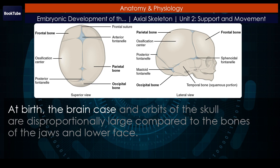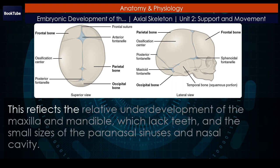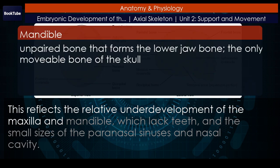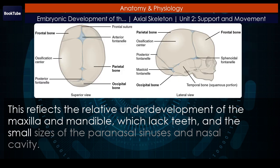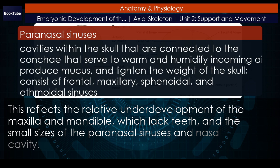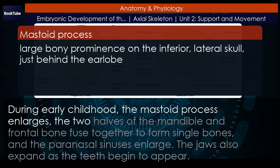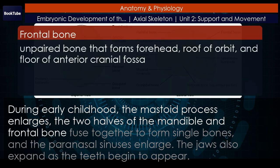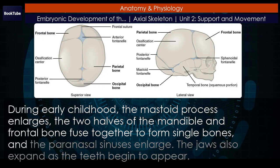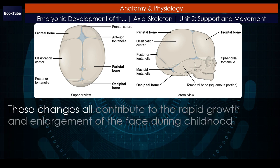At birth, the brain case and orbits of the skull are disproportionately large compared to the bones of the jaws and lower face. This reflects the relative underdevelopment of the maxilla and mandible, which lack teeth, and the small sizes of the paranasal sinuses and nasal cavity. During early childhood, the mastoid process enlarges. The two halves of the mandible and frontal bone fuse together to form single bones, and the paranasal sinuses enlarge. The jaws also expand as the teeth begin to appear. These changes all contribute to the rapid growth and enlargement of the face during childhood.